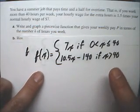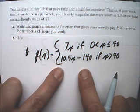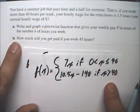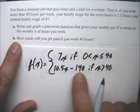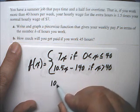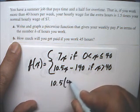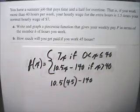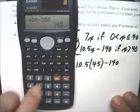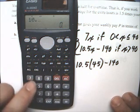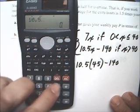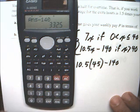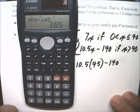So the function is 7X if it's between 0 and 40, and 10.5X minus 140 if it's greater than 40. How much will you get paid if you work 45 hours? Well, 45 hours fits into the second category, so it's going to be 10.5 times 45 minus 140. That answer is $332.50.